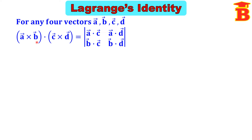On the left side, we have four vectors A, B, C, D. The bracket A cross B is a vector, and similarly C cross D is a vector, and we take the dot product of these two vectors. So finally it is a scalar quantity, which is why we call this the dot product of four vectors.